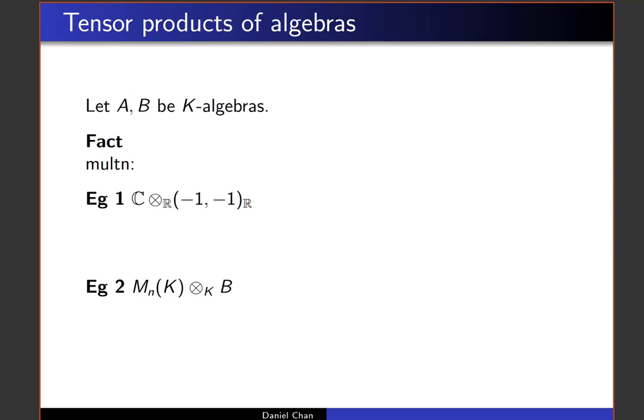To start off with we need to have the notion of tensor products of algebras. To fix our notation, k is going to be some sort of a field, and then we're going to consider two k-algebras A and B. That means that A and B are both rings and also simultaneously vector spaces, with compatible ring and vector space structure, so that the ring addition is the same as the vector space addition. Since they're vector spaces, in particular you can look at A tensor_k B, and this is a vector space — but in fact it is a k-algebra. To make it a k-algebra we need not just a vector space structure, we also need a multiplication on it.